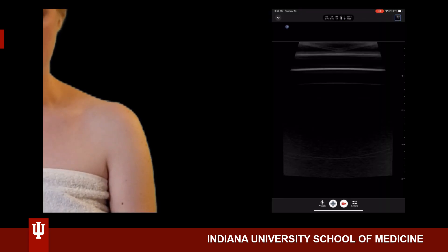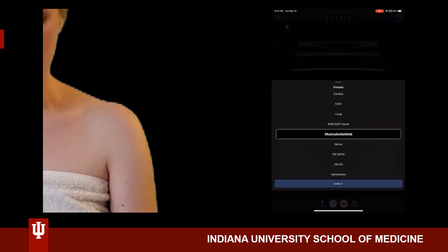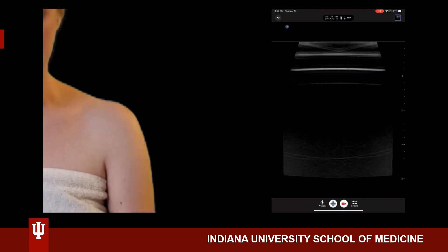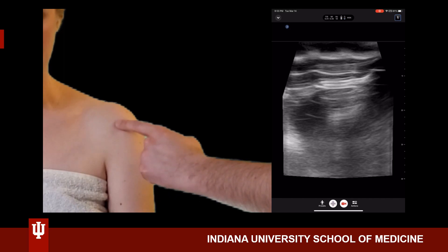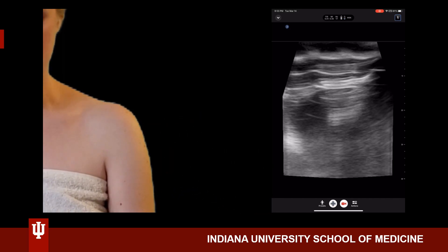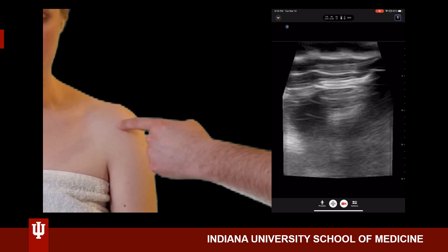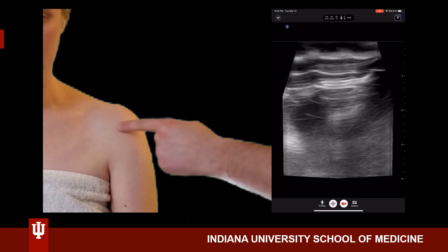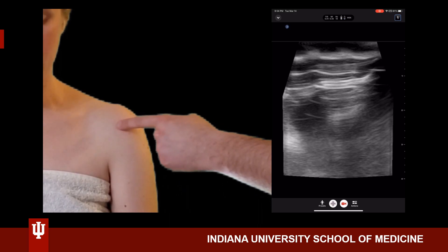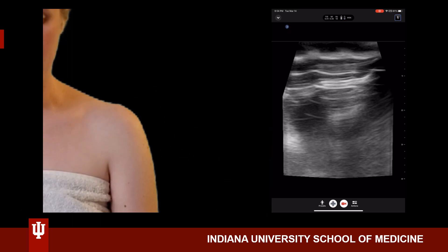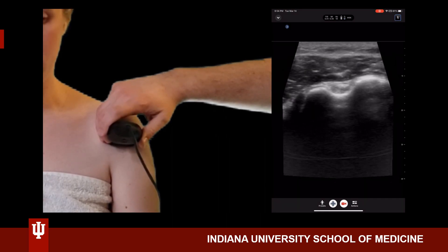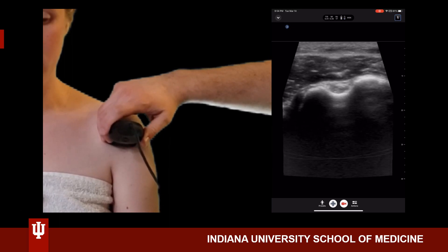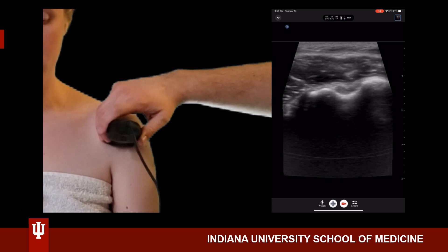When evaluating for a rotator cuff tear, choose the musculoskeletal or soft tissue preset. Keep your marker dot towards the patient's right or their head. Home base is the biceps tendon or the bicipital groove. The subscapularis will be medial to that; the infraspinatus and teres minor will be lateral; and the supraspinatus will be superior to the bicipital groove, which is a U-shape on the humerus with the biceps resting comfortably inside. The subscapularis tendon will be medial to this.